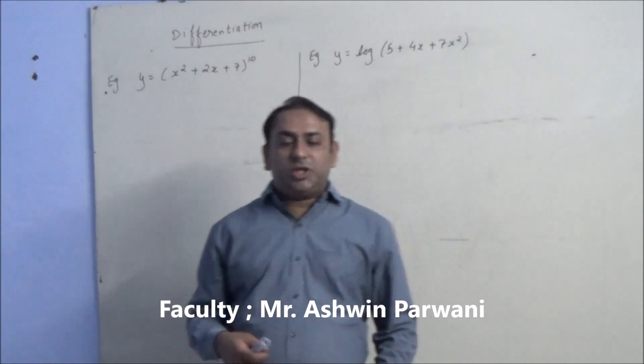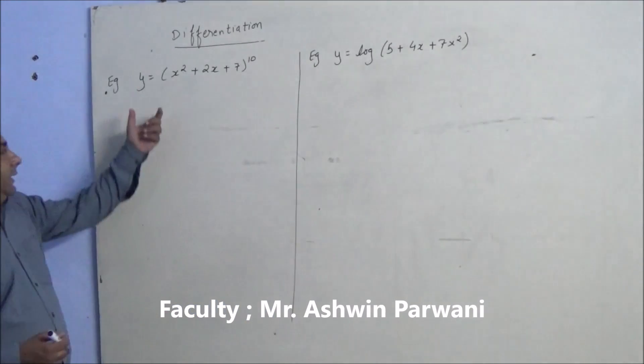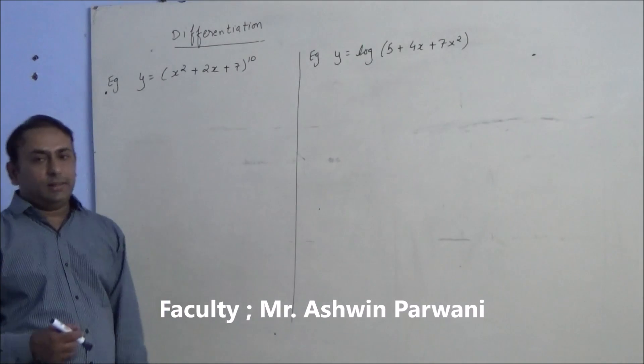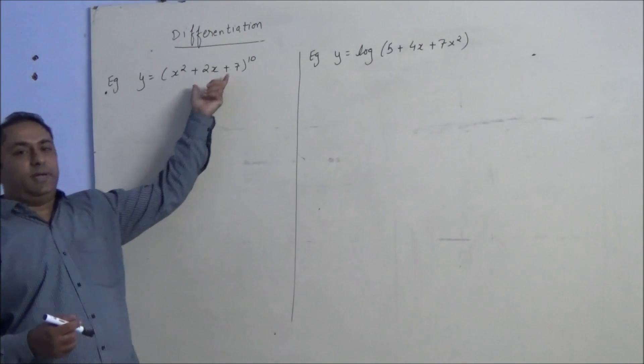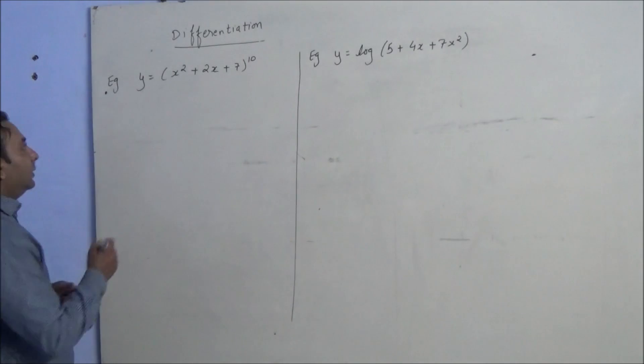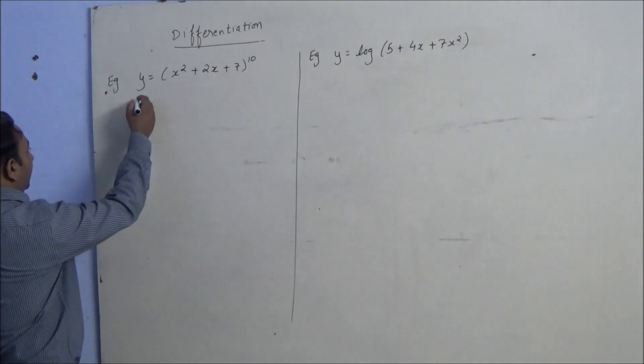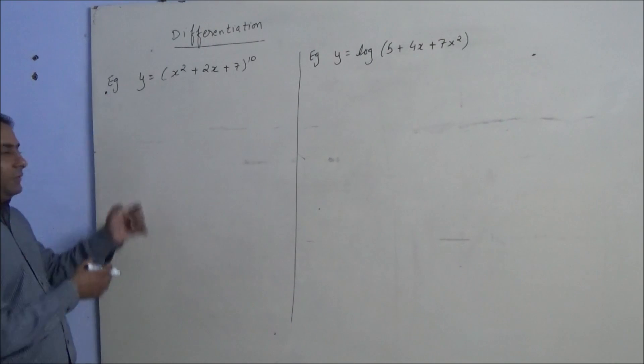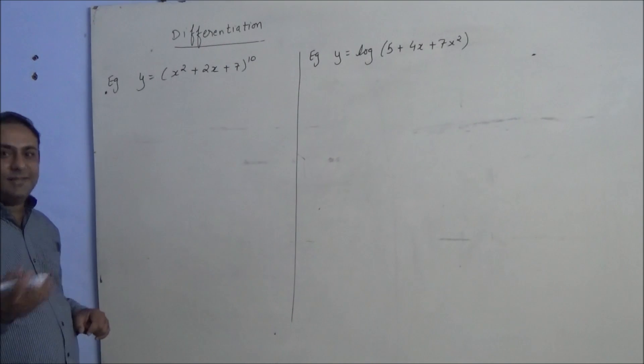Now we will see that the chain rule sums. Here, y equals x squared plus 2x plus 7 raised to 10. We don't have any formula for solving this, so we will use the chain rule. Now this can be done in two ways: by formula or by shortcut method. First I will show you by formula, then by shortcut method.